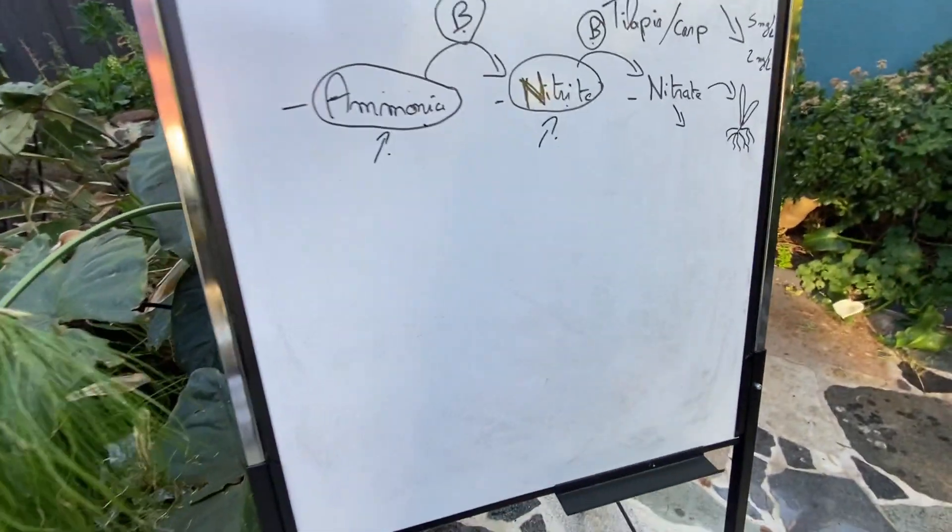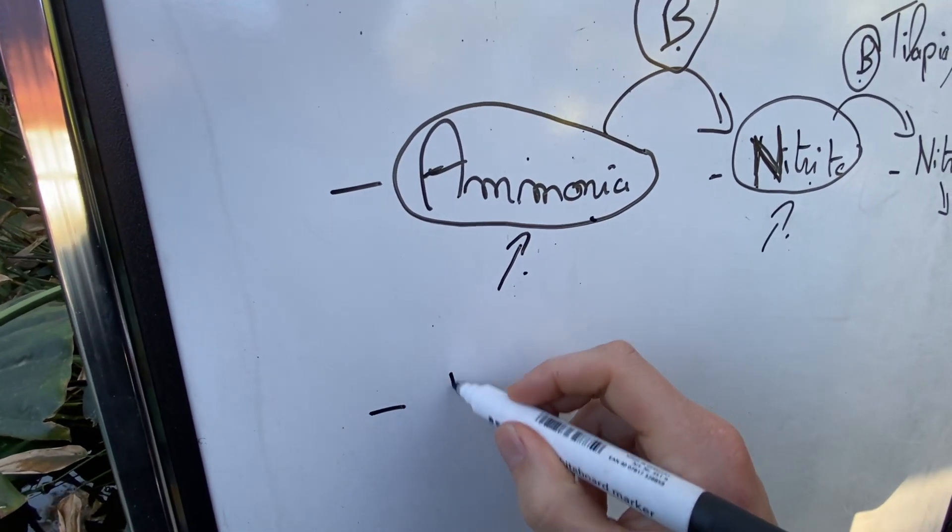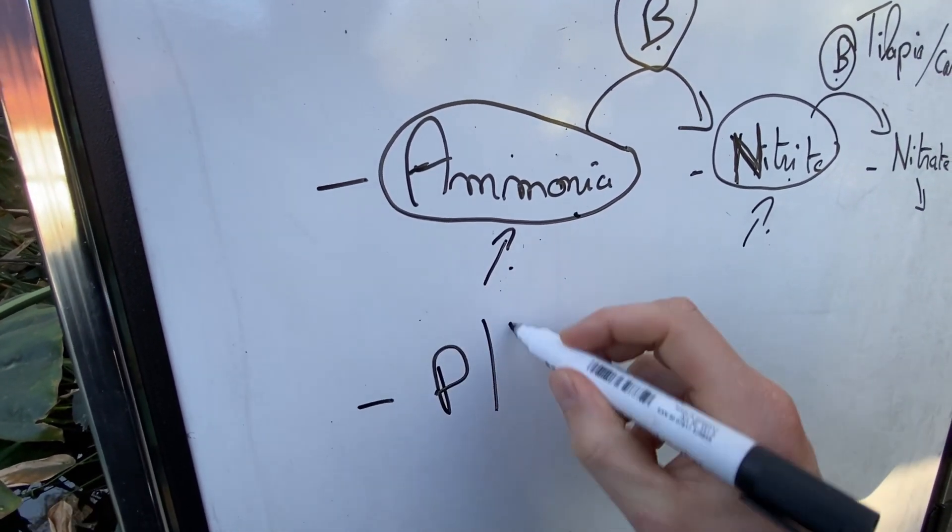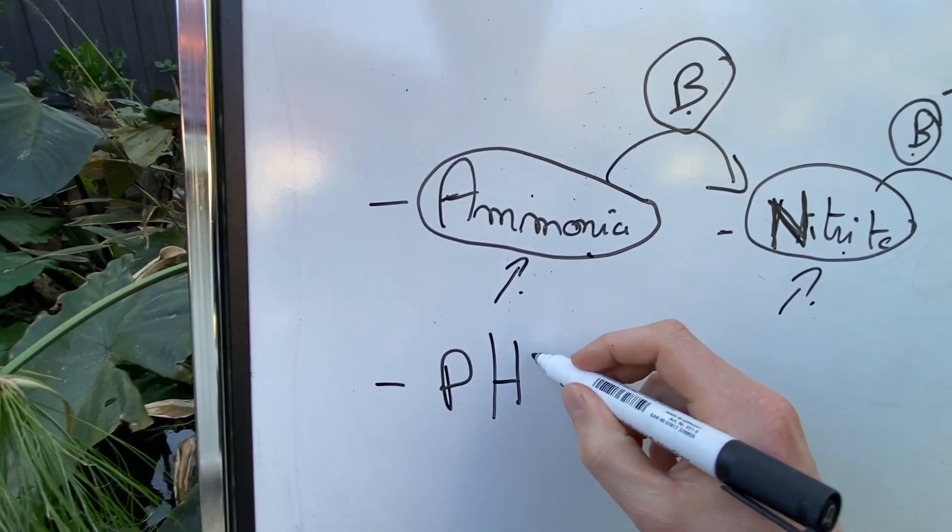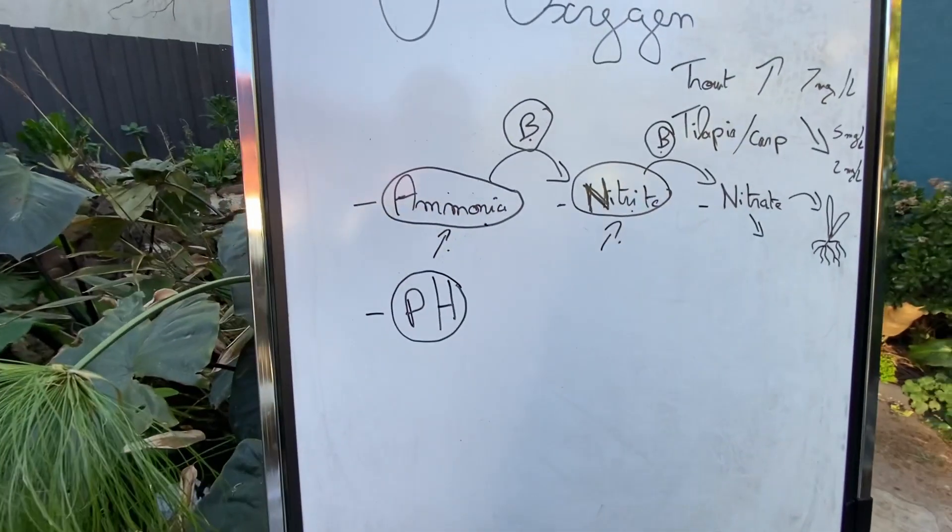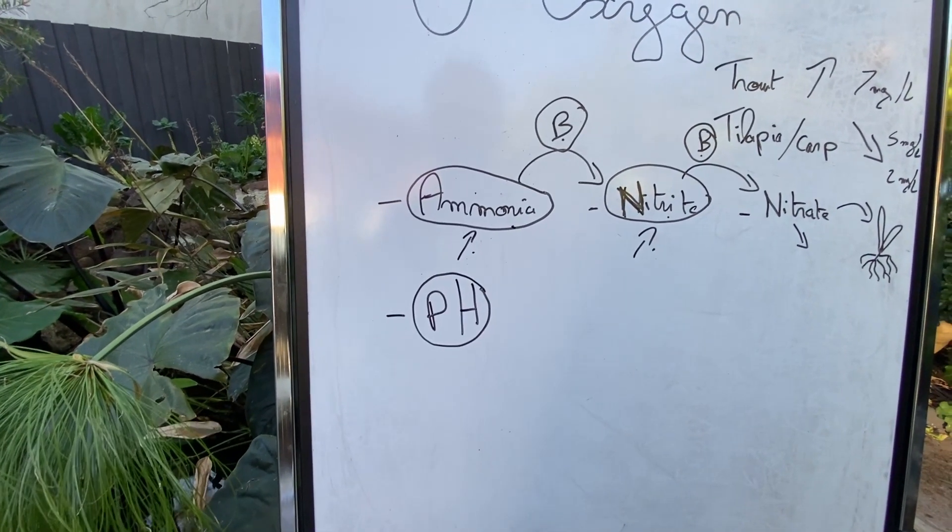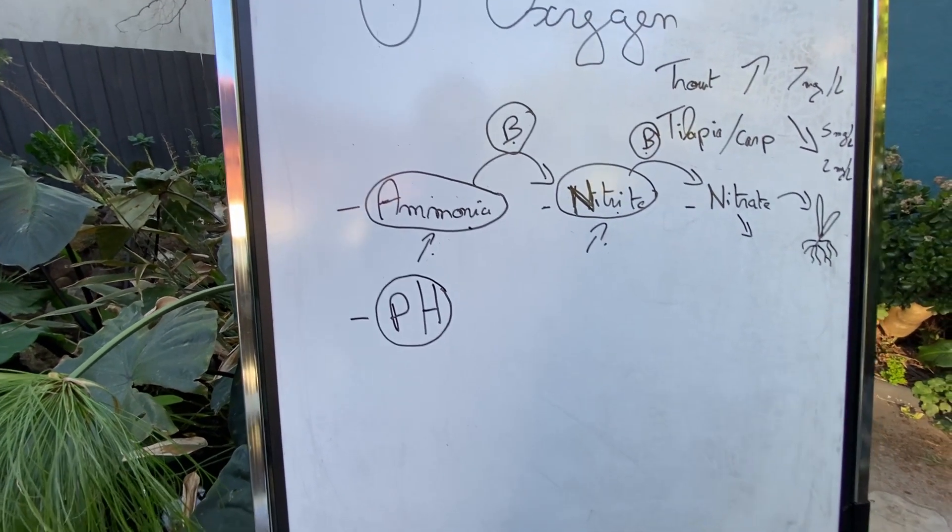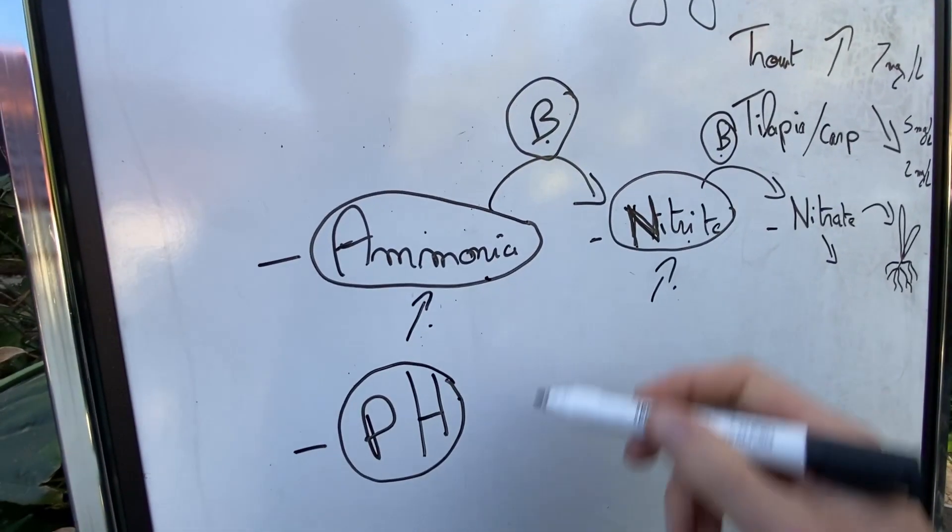Now, another parameter that is very important and well understood as well is the pH. So why do we talk about pH here? It will act on different things, but it will act on the fish as well. The fish, if the pH is too low or too high, is going to affect them. But the pH is also going to affect the activity of the bacteria.